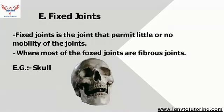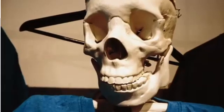Fixed joints are immovable joints. A fixed joint is a joint that permits little or no mobility, and most of the fixed joints are fibrous joints. An example is the skull.